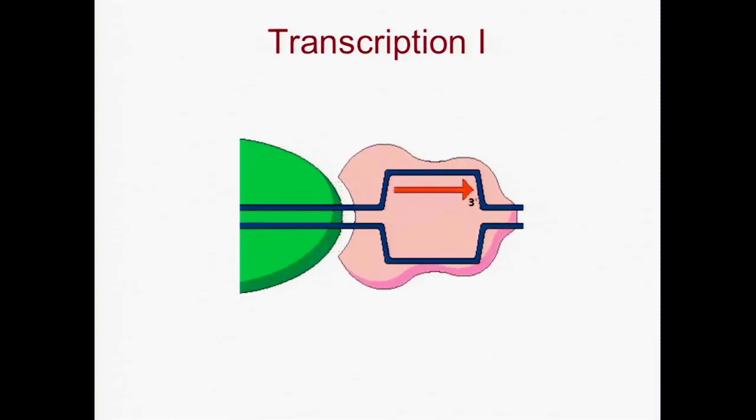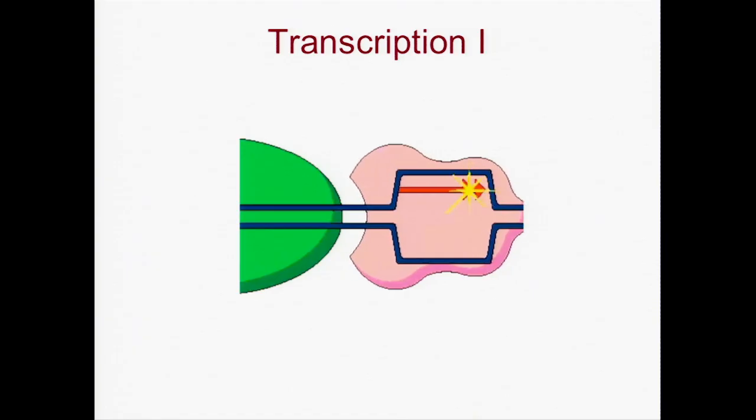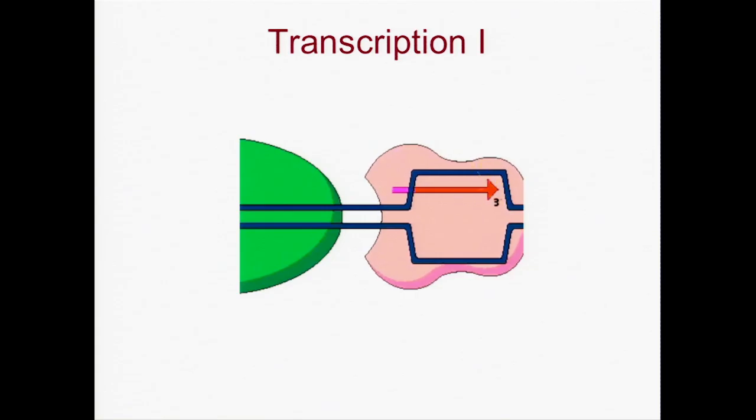As RNA polymerase proceeds, the starting five prime end of the new RNA strand separates from the template DNA and begins to trail behind the polymerase. This allows the two DNA strands to reunite.